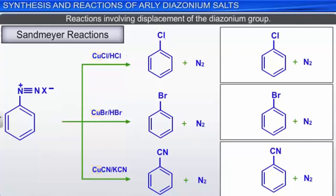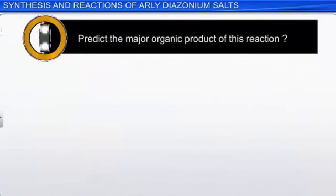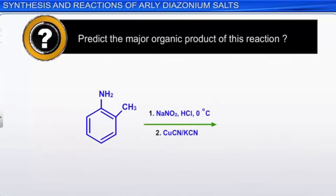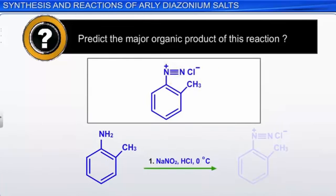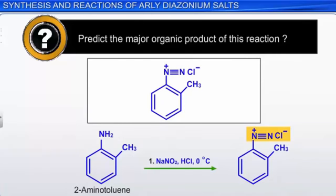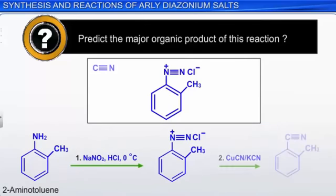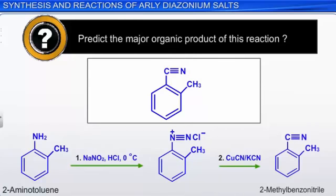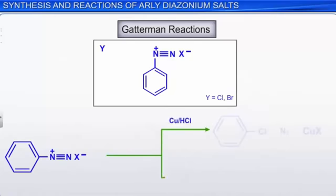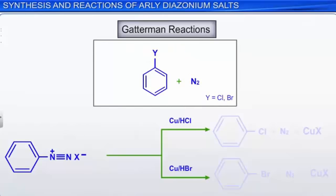Here is a problem: predict the major organic product of this reaction. The first step converts a primary amine into the corresponding aryl diazonium salt. The second step is a Sandmeyer reaction in which the diazonium group is replaced by a nitrile group. In the Gattermann reactions, the diazonium group is replaced by a chlorine or bromine group. To carry out these transformations, the diazonium salt solution is treated with the appropriate halo acid in the presence of copper powder. In general, yields for the Gattermann reactions are lower than for the analogous Sandmeyer reactions.